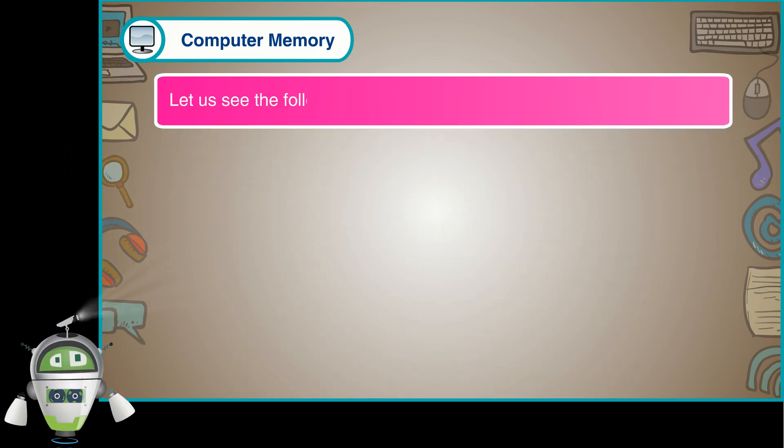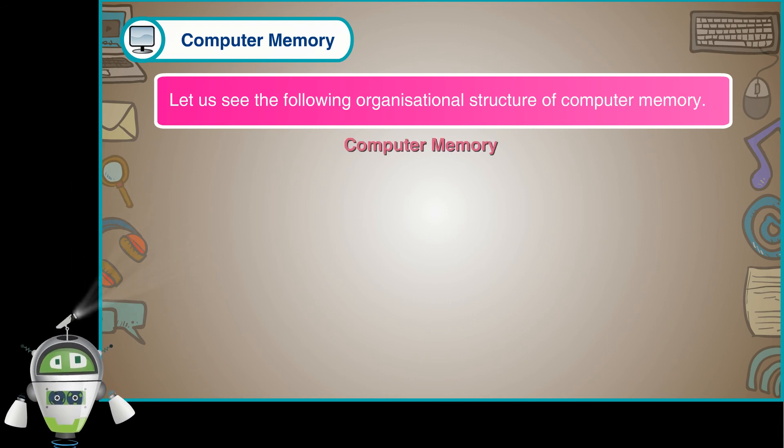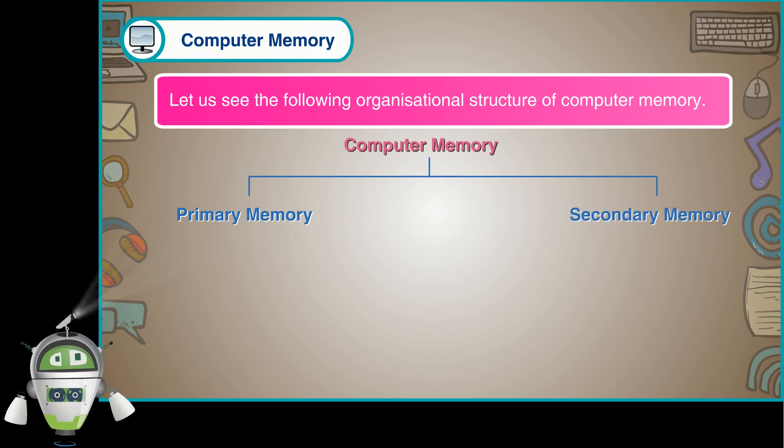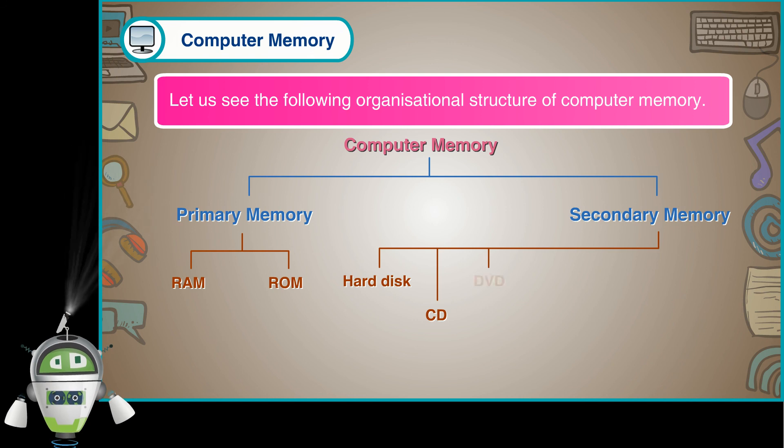Let us see the following organizational structure of computer memory. Computer memory includes Primary memory: RAM and ROM, and Secondary memory: Hard disk, CD, DVD, Blu-ray disk, Flash drive, and Memory card.